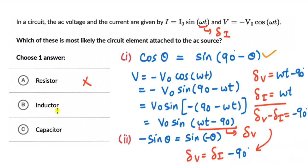In an inductor, voltage leads the current — not lags. In a capacitor, to change the voltage across the plates we must first run a current, so the current leads the voltage. Since the voltage is lagging the current here, the circuit element is a capacitor, and the correct option is C. Try more questions from this exercise — if you're on YouTube, the link is in the description.